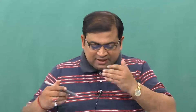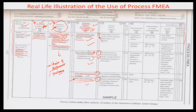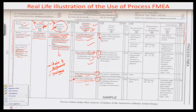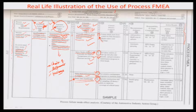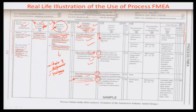We now want to look at detectability. Coming back to this particular check sheet, column 14 lists the potential causes or failure mechanisms, and the occurrence of different mechanisms causing failure was rated. Now we discuss detectability — how easy or difficult it is to detect — and rank accordingly, looking at the current process controls available.